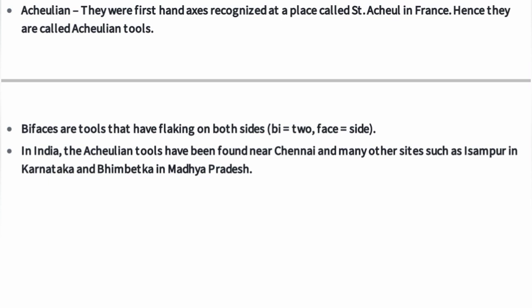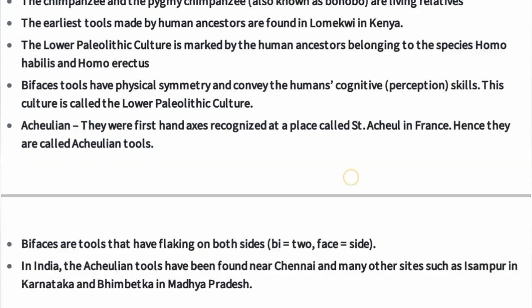In India, the Acheulian tools have been found near Chennai and many other sites such as Isampur in Karnataka and Bhimbetka in Madhya Pradesh.